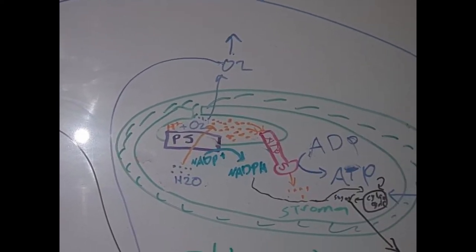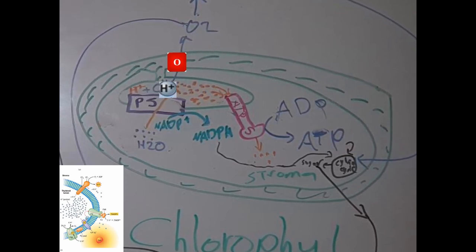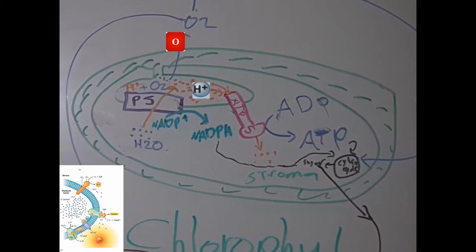Next, in the chloroplast, the photosystems in the thylakoid membrane split water into oxygen and hydrogen protons.